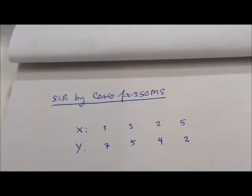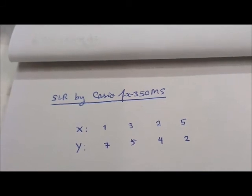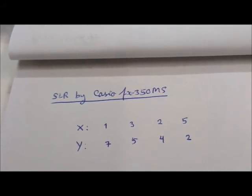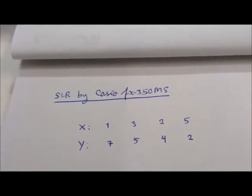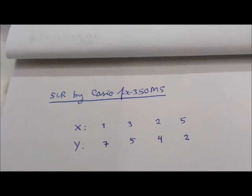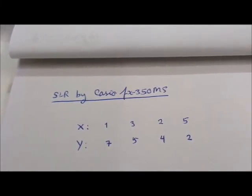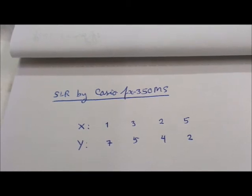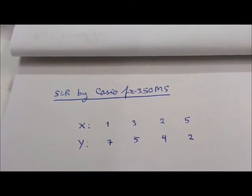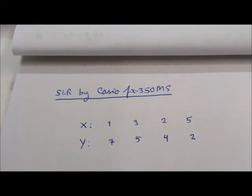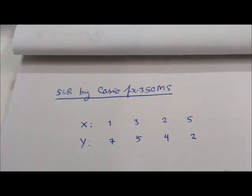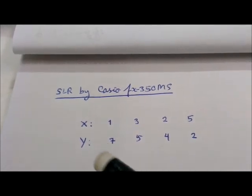We will study how to enter a dataset in the calculator Casio fx-350MS for simple linear regression and correlation analysis. To construct a simple linear regression equation, you have to first distinguish between the independent variable x and the dependent variable y.